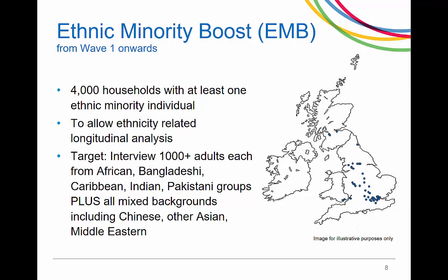The Ethnic Minority Boost sample contains around 4,000 households with at least one ethnic minority individual. It was designed to allow longitudinal analysis of ethnicity and migration-related issues. The target was to survey at least 1,000 adults in each of the following groups – African, Bangladeshi, Caribbean, Indian and Pakistani groups, plus 1,000 from all mixed backgrounds as well as Chinese, other Asian and Middle Eastern.